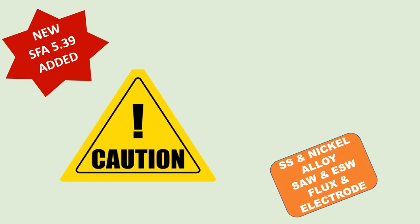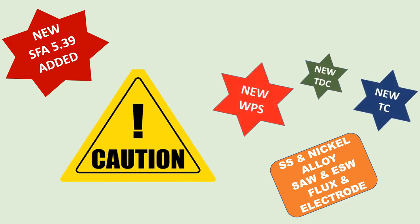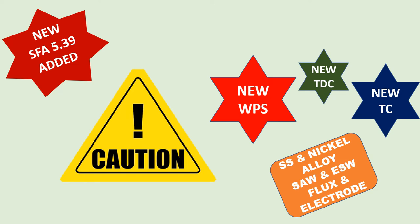CAUTION! For all equipment designed as per the 2021 edition, with the addition of new SFA 5.39, all the old WPS for stainless steel and nickel alloy for submerged arc welding and electro-slag welding processes may have to be revised with the addition of the new SFA number. Also, new technical specification requirements may have to be given and new consumable test certificates may have to be prepared by the manufacturer.